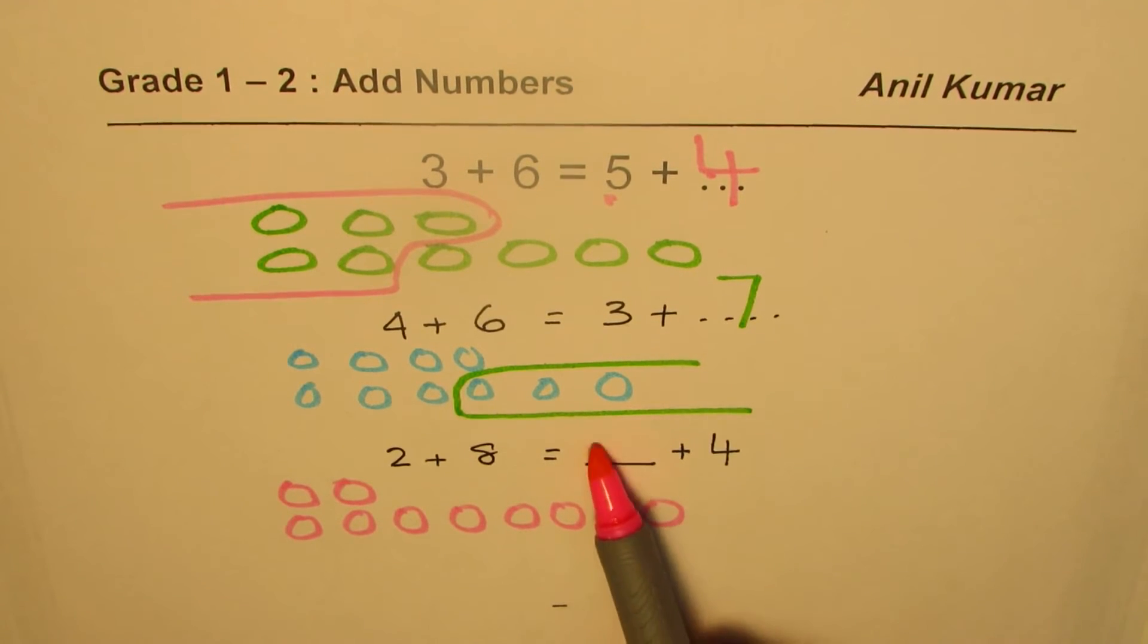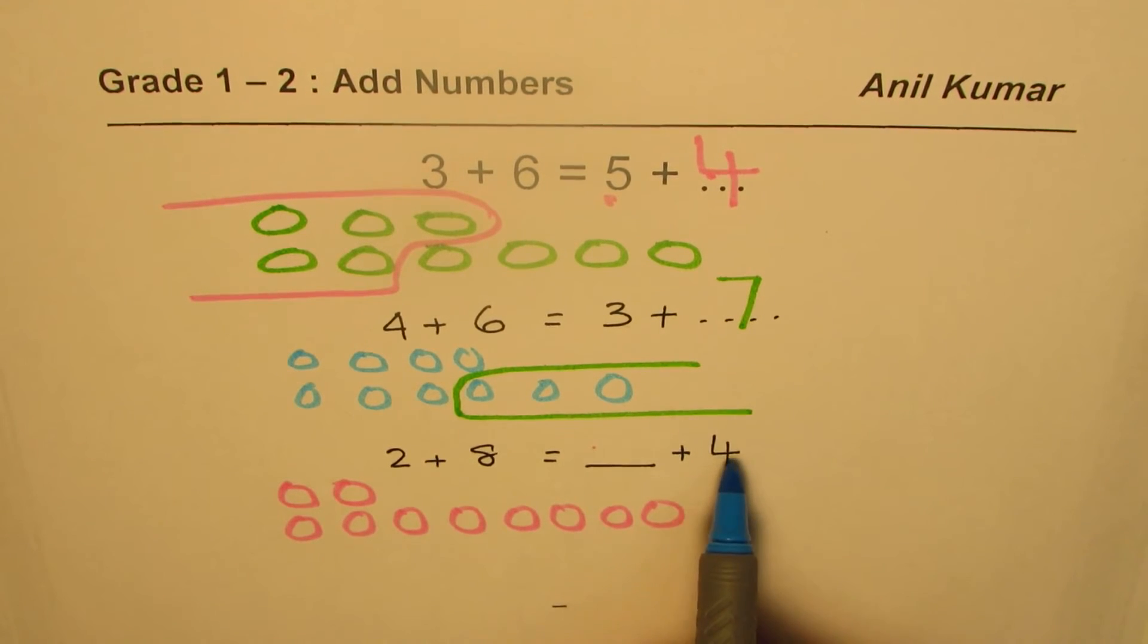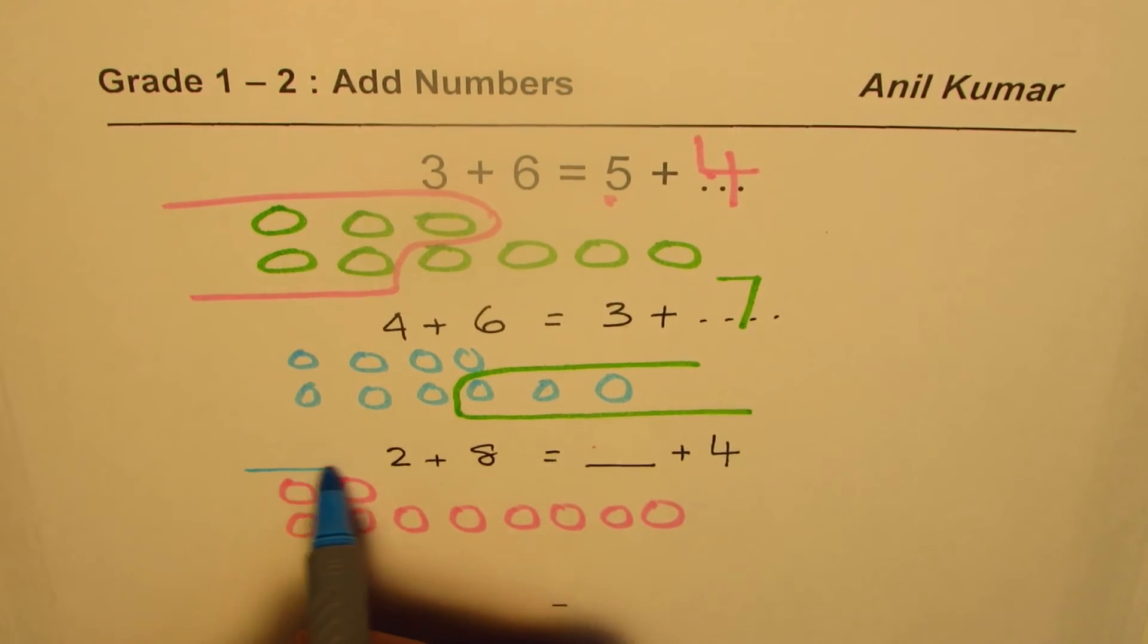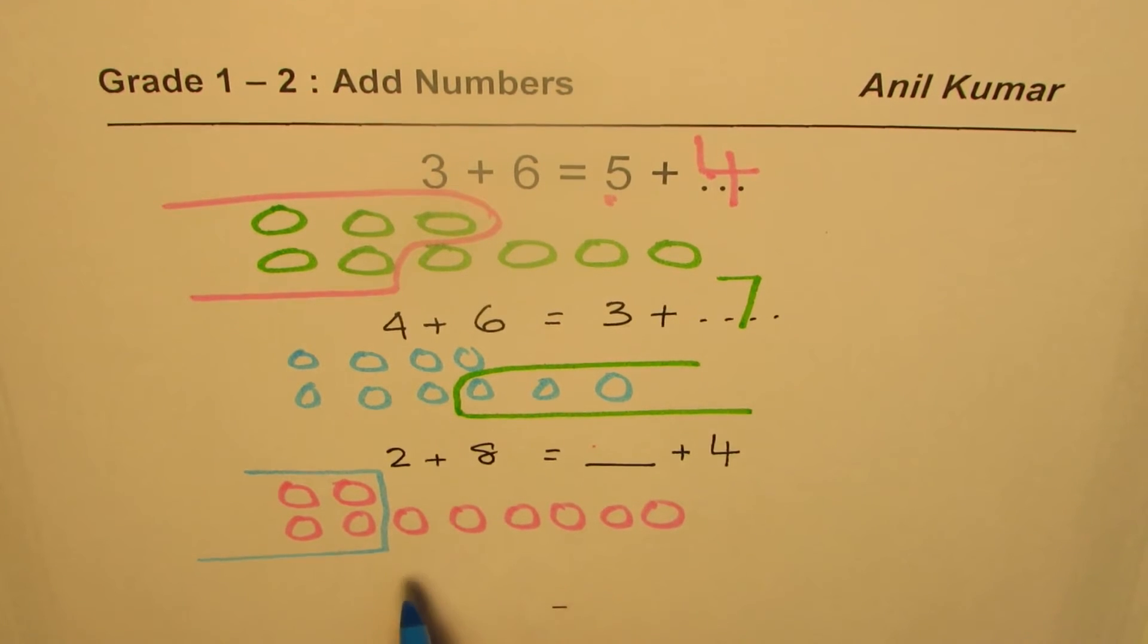We want to fill in what should go there. But before that we have to take away four. One, two, three, four. Let me take away these four this time. How many left? One, two, three, four, five, six. That number comes here. So 2 + 8 is 6 + 4.